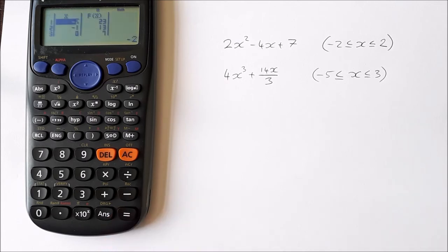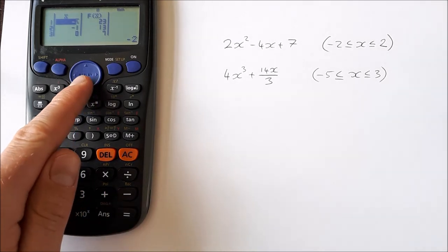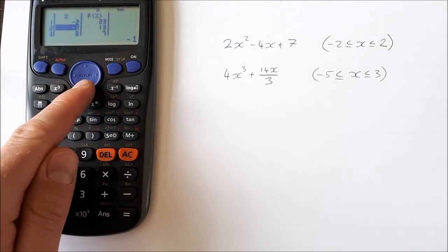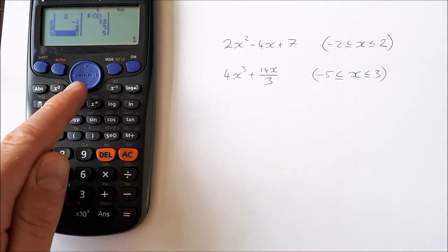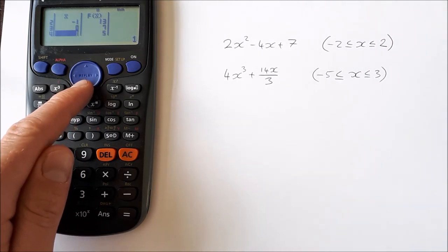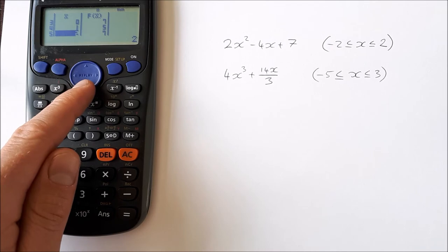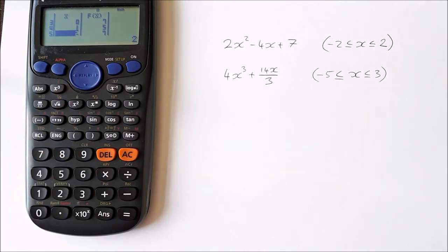We press equals and this gives us our table. In the left-hand column we have our x values, in the right-hand column we have our f(x) or y values. When x is -2, f(x) is 23. When x is -1, f(x) is 13. When x is 0, f(x) is 7. When x is 1, f(x) is 5. And when x is 2, f(x) is 7.